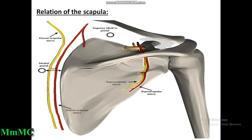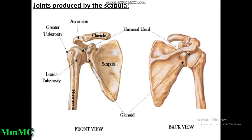Relations of the scapula: the superior border has a notch called the suprascapular notch, converted into a foramen by the transverse scapular ligament. The suprascapular artery passes above the ligament and the suprascapular nerve passes below the ligament through this foramen. Joints produced by the scapula: the glenoid cavity articulates with the head of the humerus to form the shoulder joint (ball-and-socket variety), and the acromion process articulates with the acromial end of the clavicle to form the acromioclavicular joint (plane variety).